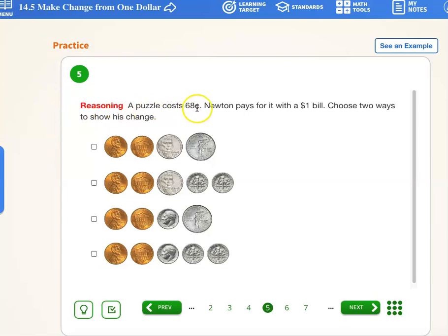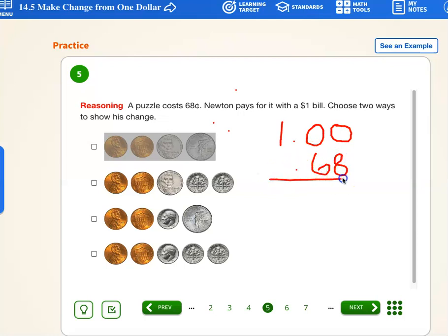A puzzle costs 68 cents. Newton pays for it with $1. Choose two ways to show his change. Okay. So he started with how much money? Started with $1, 1.00 and he bought a puzzle. So he's going to be spending 68 cents. Let's mark that down. 68. And we're trying to figure out, and this is the takeaway because it's how much he's planning on spending. So now we're trying to figure out how much left, how much is he going to get in change?